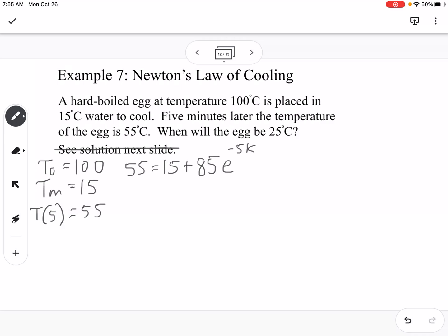We're solving for K. We are going to start by subtracting 15 from both sides, that gives us 40, and then we're going to divide by 85. So that gives us 40 over 85 equals E to the negative 5K. Now we want to switch the form. This would be natural log of 40 over 85 equals negative 5K. We can type that in the calculator, do natural log of 40 over 85, then divide both sides by negative 5, and we should get 0.1507 equals K.